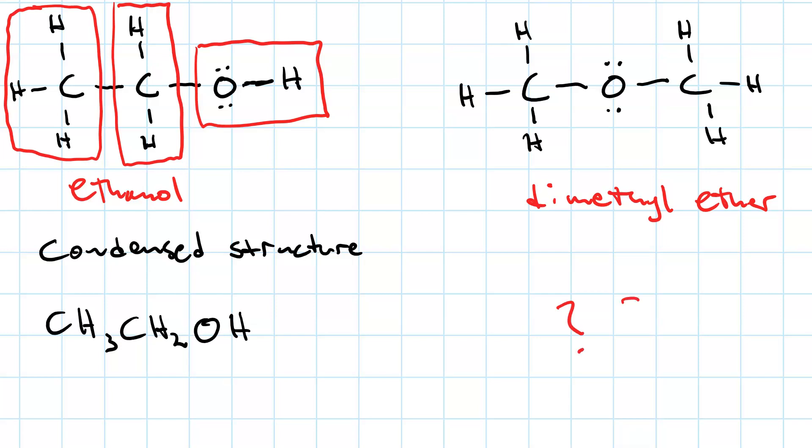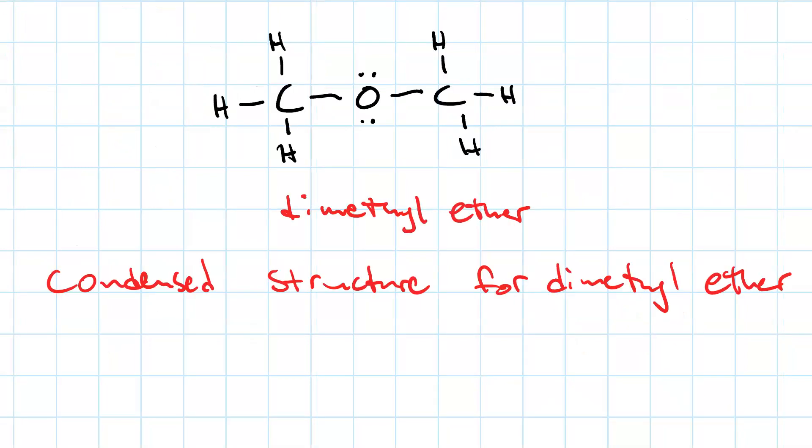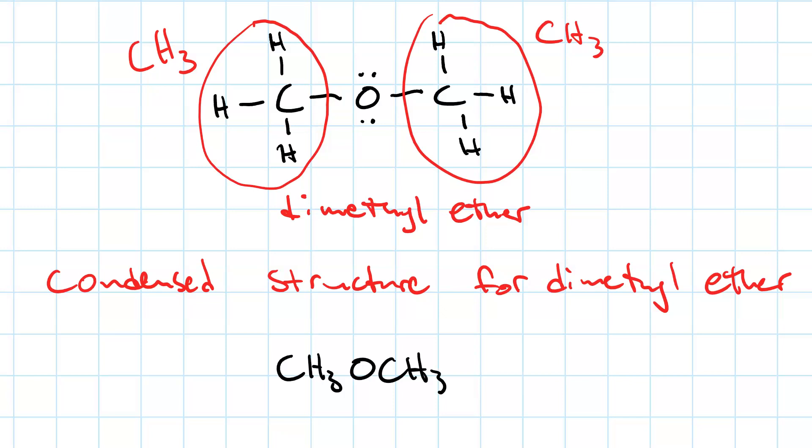Can you draw the condensed structure for dimethyl ether? Pause and try it. If you're ready, we've got a CH3 group on the left and a CH3 group on the right, bridged by an oxygen. So the condensed structure is CH3OCH3. That's much easier than drawing out all those hydrogens and dashes.